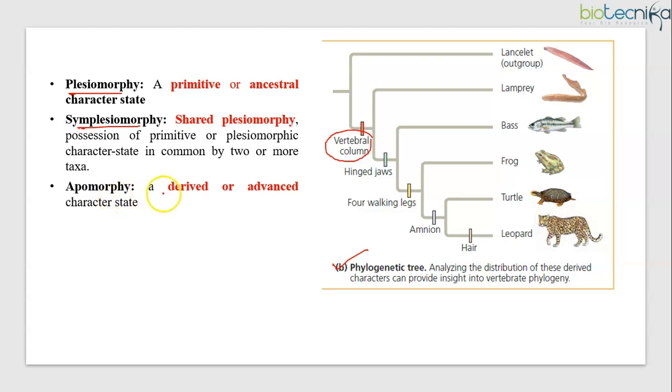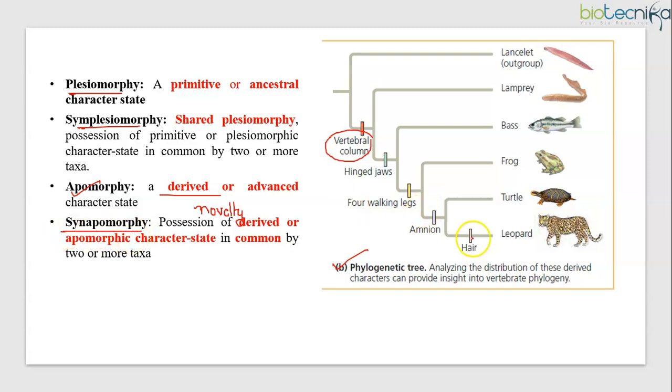In contrast to an ancestral character state, a derived character state or you can call it as advanced character state or evolutionary novelty is called as apomorphy or apomorphic character. And shared apomorphy is called as synapomorphy. For example, here, it's a character state, a character shared by all mammals but not found in their ancestors. Thus, hair in mammals is considered a shared derived character or you can say an evolutionary novelty unique to a clade. Then also, we have a term called as autoapomorphy. An apomorphy that is unique to a taxon is called as autoapomorphy. An example of a non-anatomical autoapomorphy in modern humans is speech, which is unique to humans.